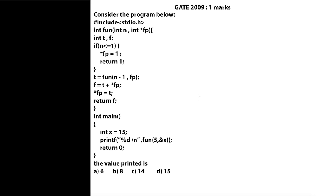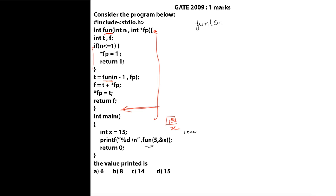Take this question. This question was asked in 2009 and it is based on recursive functions. As you can see, we are having a recursive call here — we are calling this function again. The program execution will start in the main function, where we are calling fun(5, 1000), passing the address of variable x.